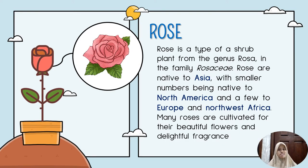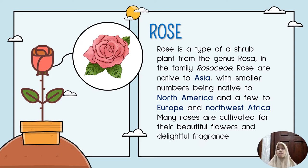The general description about roses. Rose is a type of a shrub plant from the genus Rosa in the family of Rosaceae. Roses are native to Asia, with a smaller number being native to North America and a few to Europe and Northwest Africa. Many roses are cultivated for their beautiful flowers and delightful fragrance.